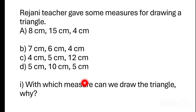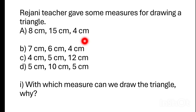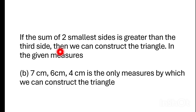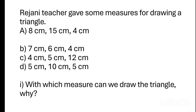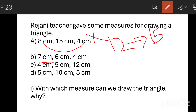When we draw a triangle, we will draw it in any measurement. We have a rule: the sum of the two smaller sides is greater than the third side. Then we can construct the triangle. The smallest side is greater than the third side.